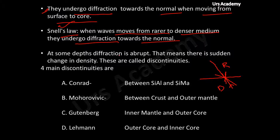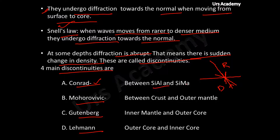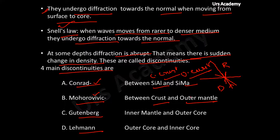At some depths, refraction is abrupt, meaning there is a sudden change in density. These are called discontinuities. There are four main discontinuities inside the Earth: Konrad, Mohorovic, Gutenberg, and Lehmann. The Konrad discontinuity is between Sial (continental crust) and Sima (oceanic crust). Mohorovic is between the crust and outer mantle. Gutenberg is between the inner mantle and outer core. Lehmann is between the outer core and inner core. Please remember these discontinuities.